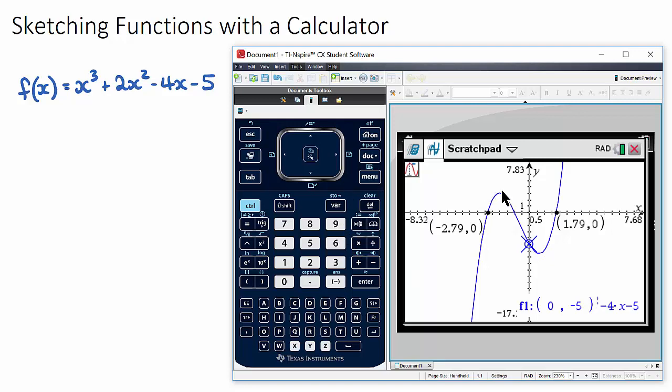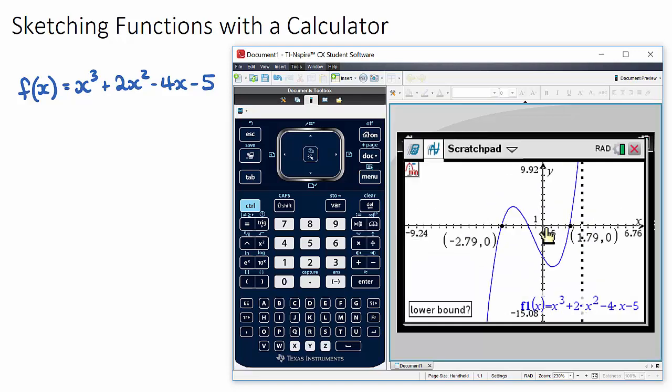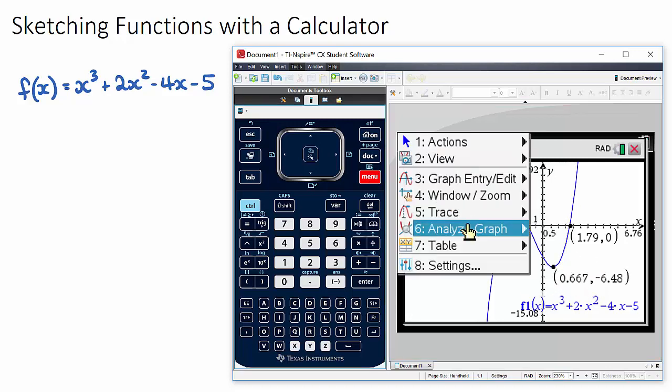If we want to find the maximum and the minimum, we go back to our analyze graph section - minimum and maximum. If we choose minimum first, this will obviously be our minimum, so I want you to define a lower bound here and an upper bound here. That's our minimum, and the maximum is the same.